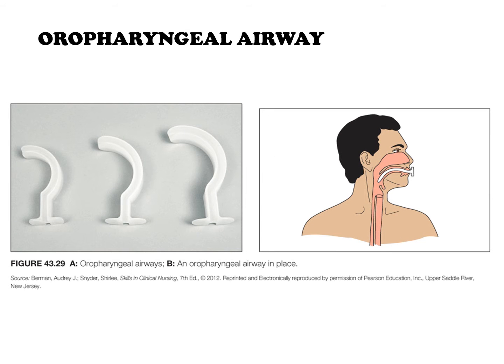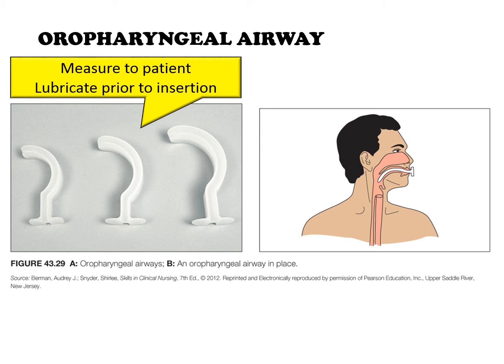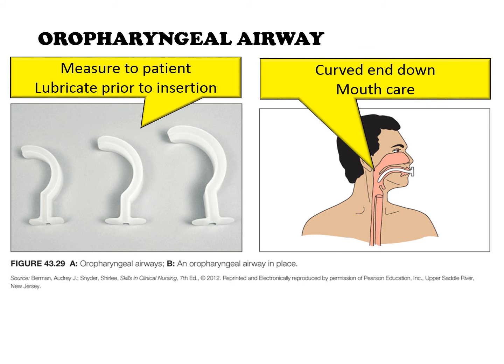To determine the correct size, measure from the corner of the patient's mouth to the angle of the jaw. The tube should be lubricated prior to insertion. When inserting, the curved end should be pointed upwards. Once the curved end reaches the soft palate at the back of the mouth, the tube will be rotated 180 degrees so the curved end faces downwards towards the larynx.